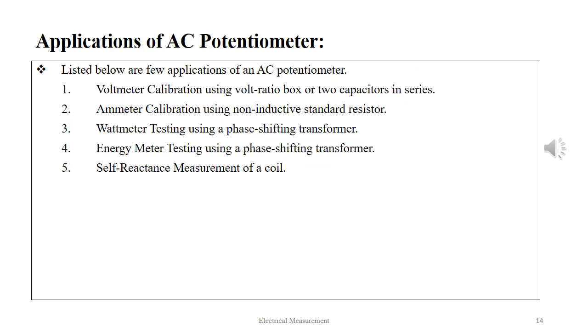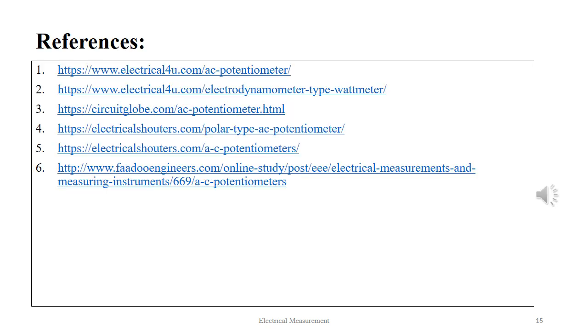The applications of AC potentiometer are listed below: voltmeter calibration using volt ratio box or two capacitors in series, ammeter calibration using non-inductive standard resistor, wattmeter testing using a phase shifting transformer, energy meter testing using a phase shifting transformer, and self-inductance measurement of a coil. For further detailed reading, the viewers can refer to the following links. Thank you.